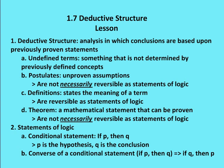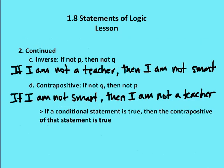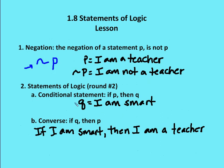So let's move on to statements of logic, which flows naturally from deductive structure. Let's talk about negation — the negation of a statement P would be not P. So if the hypothesis is 'I am a teacher,' then not P would be 'I am not a teacher.' Let's use the example: if I am a teacher, then I am smart. P is 'I am a teacher,' Q is 'I am smart.' The converse of that switches it around: if I am smart, then I am a teacher.